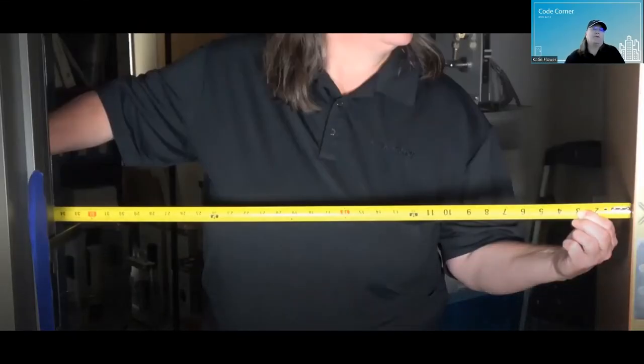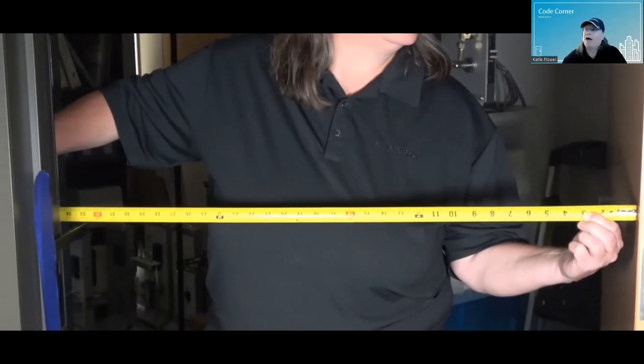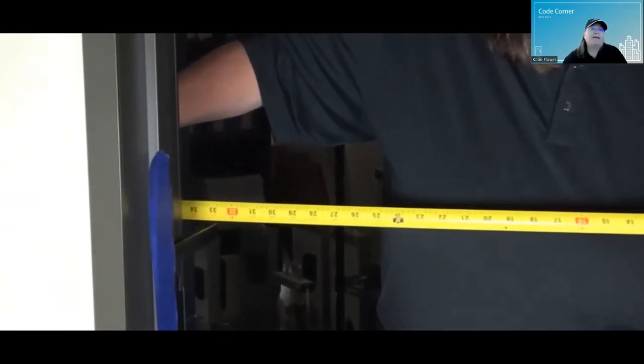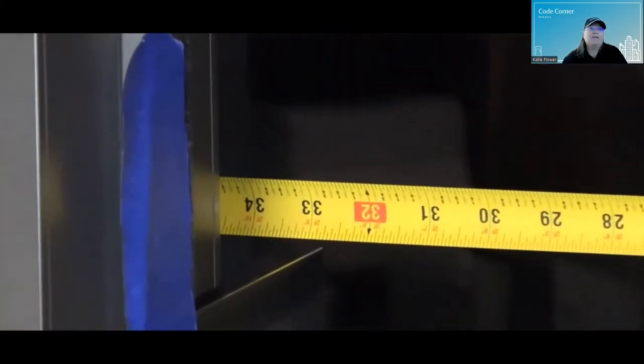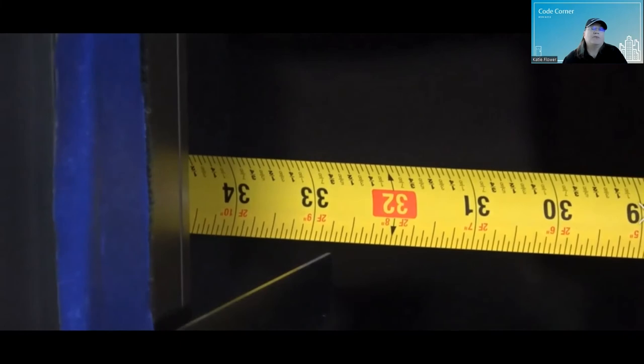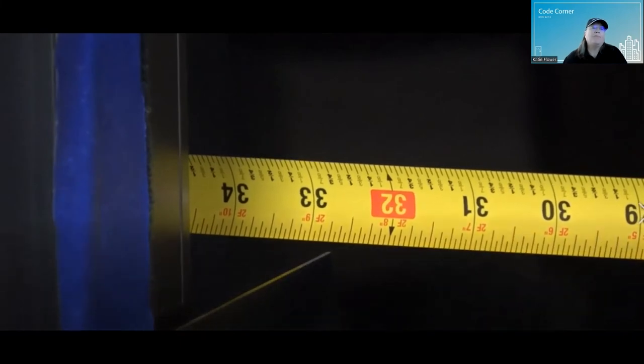I measured a door from the face of the door to the face of the stop. And as you can see with the ruler extended, that gives us 33 inches clear for a three foot door. And this is an aluminum frame, so it doesn't really matter whether it's a wood frame, polymetal, or aluminum, you get the same result.